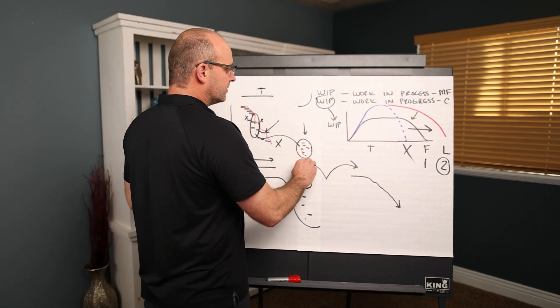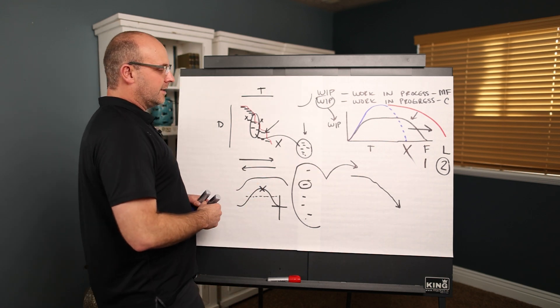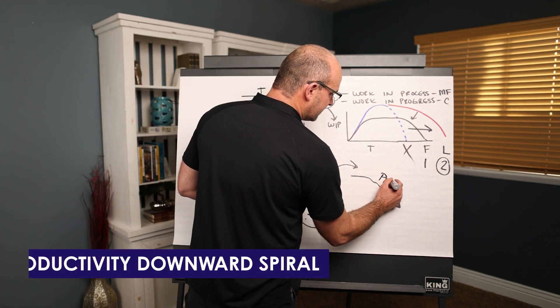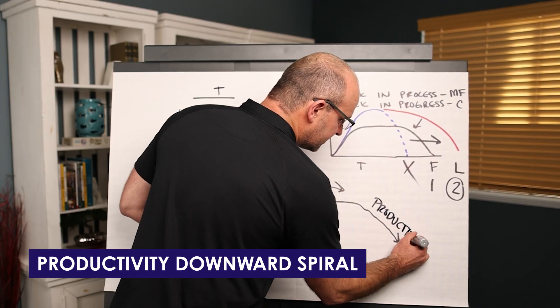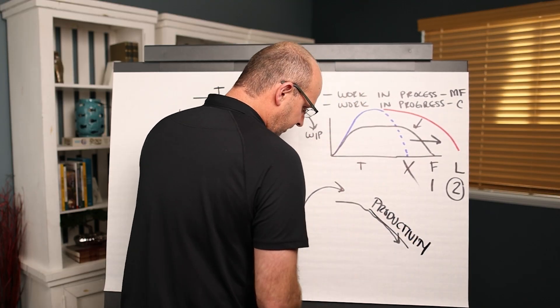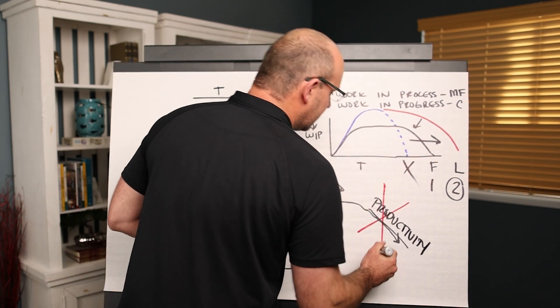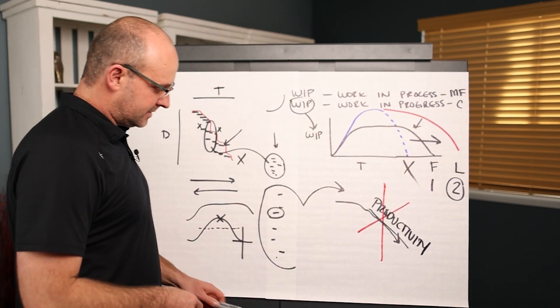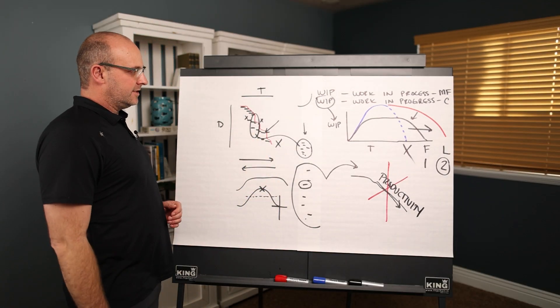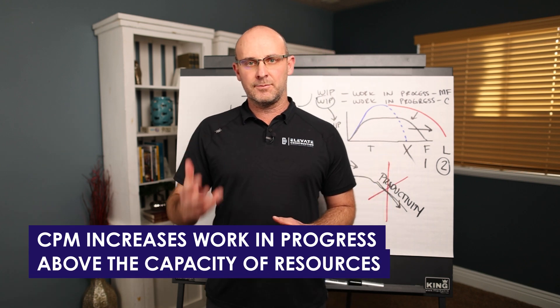And the other thing is it always ends up with trade stacking and trade burdening and hurting people. And the worst part about it is even if you didn't care about people, you enter into a downward productivity spiral. And it's really bad. And you're never going to recover from it. And this is the reason that every single construction project in our industry using CPM has problems and why we're on the decline from a productivity standpoint. CPM increases work in progress above the capacity of resources.